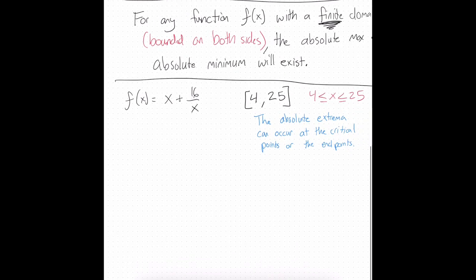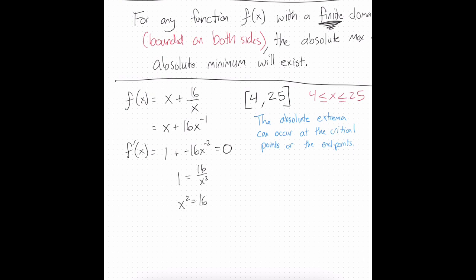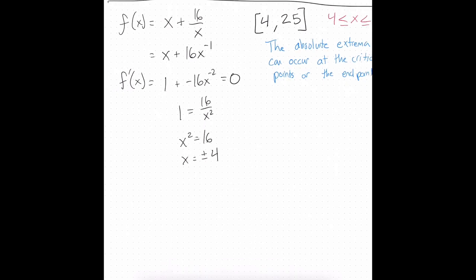With that in mind, I have to find my critical points. Let me rewrite the function and find the derivative. f prime of x is equal to 1 minus 16x to the negative 2. Set that equal to 0, because I'm finding critical points, and I get 1 equals 16 over x squared. That negative 2 exponent means I can put it in the denominator. Multiply both sides by x squared — I get x squared equals 16, and x equals positive or negative 4. So those are my critical points.